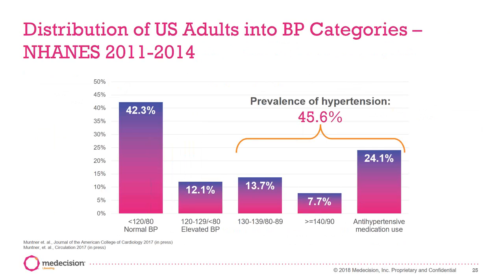If we now look at the new data according to NHANES, you can see in this middle bar that we're now including a population of those in the 130 to 139 over 80 to 89 range — in other words, the new stage one — which means that according to these estimates, the prevalence of hypertension is now defined by recent studies. I think this is in the July issue of JAMA Cardiology. We're now at almost 46% of our population, which is about 105 million people according to this new taxonomy. Quite striking.